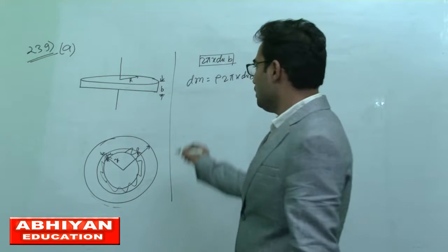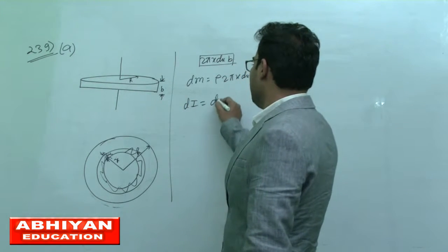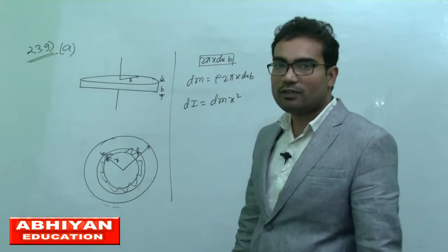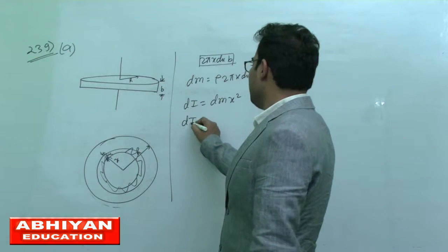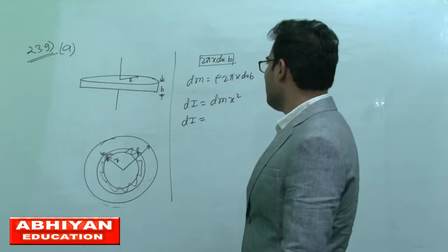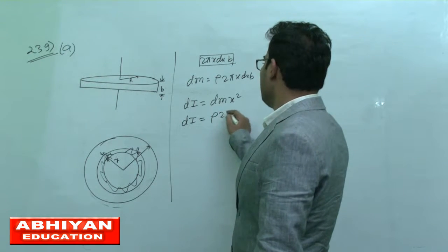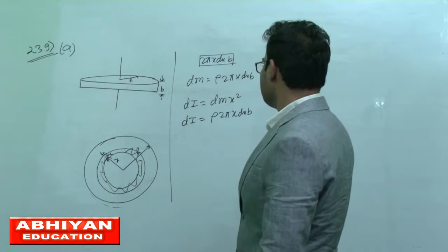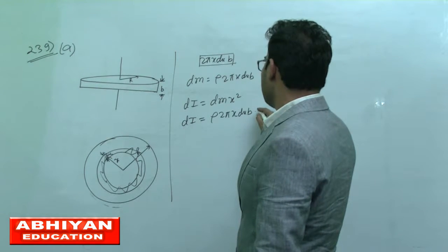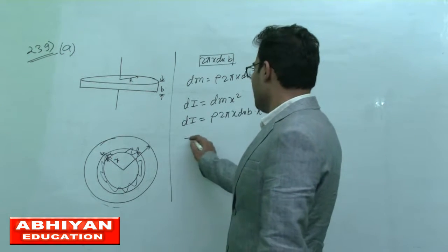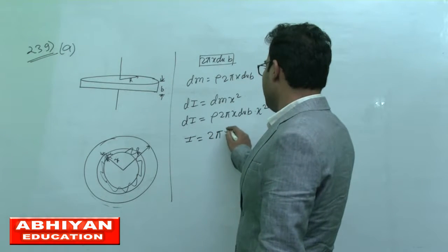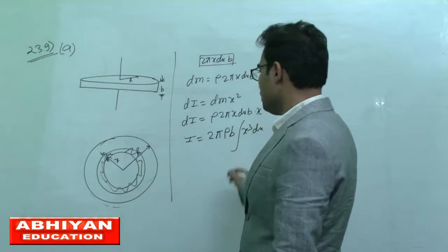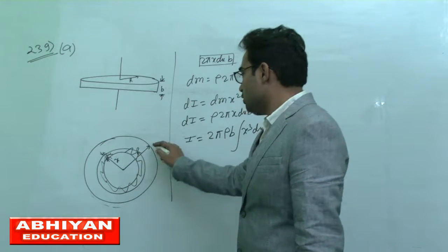The moment of inertia of the ring dI equals dm r square, and r equals x, so dm x square is the moment of inertia. So dI equals rho 2 pi x dx into b into x square, then I equals 2 pi rho b x cube dx. The integration limit is 0 to capital R.